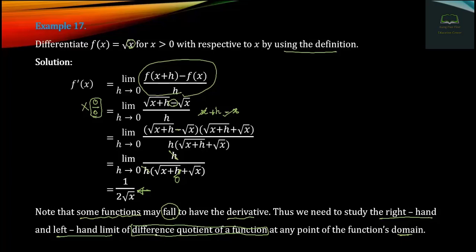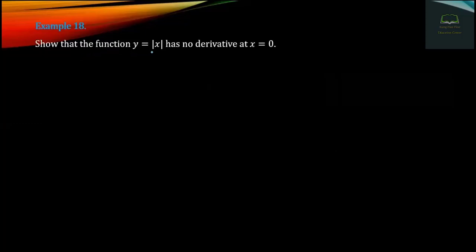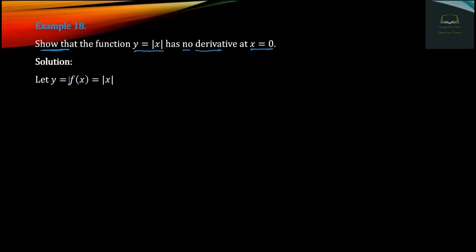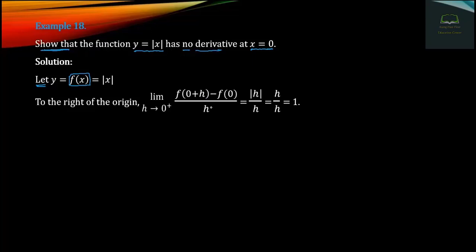The function y equals modulus of x has no derivative at x equals zero. The difference between the right-hand and left-hand limit is the key — which shows they are not the same.